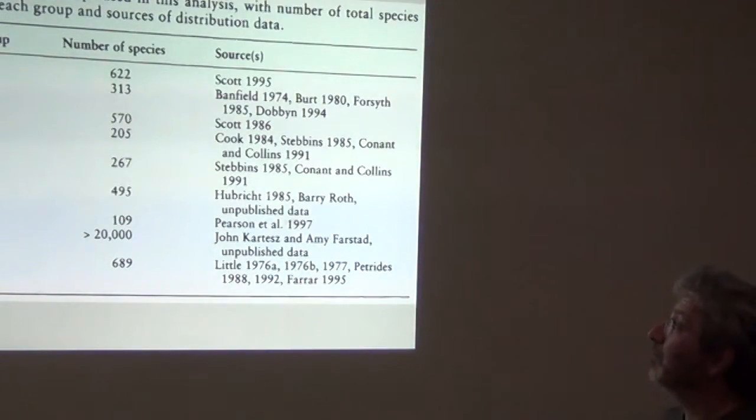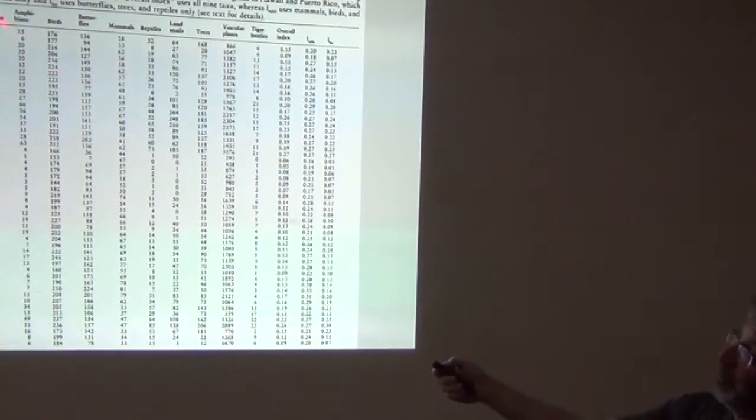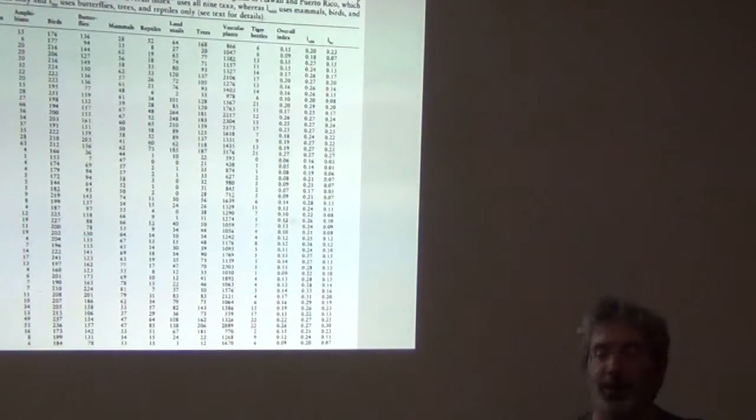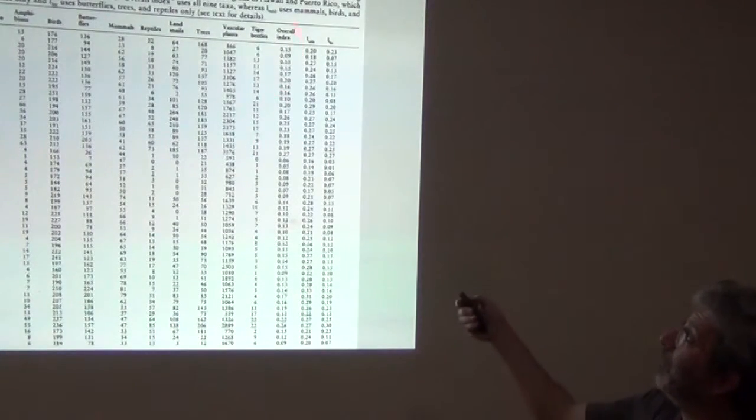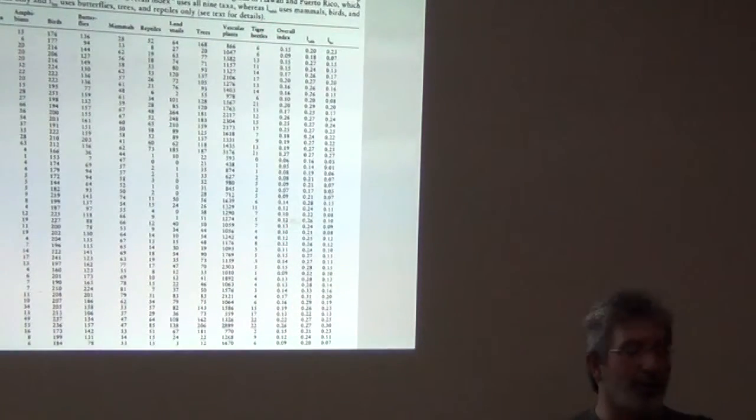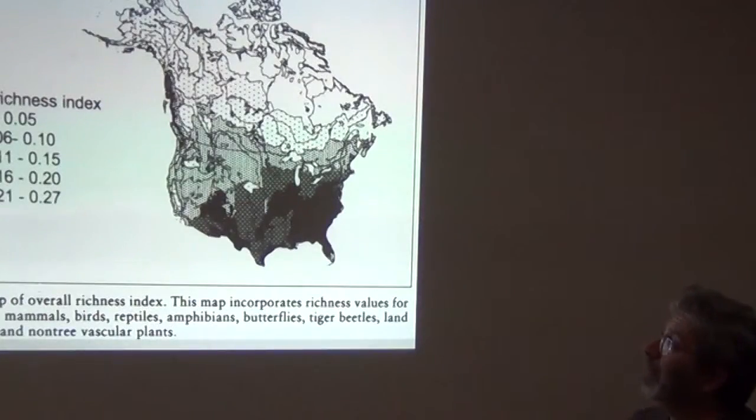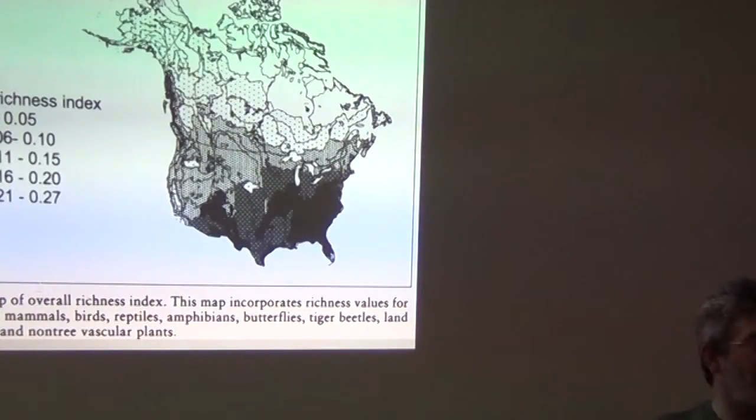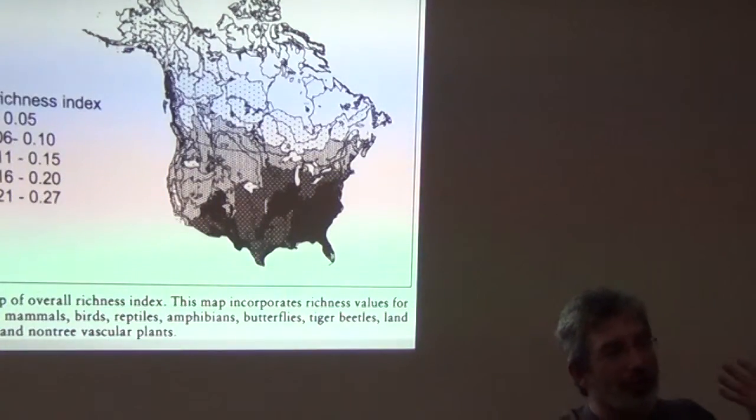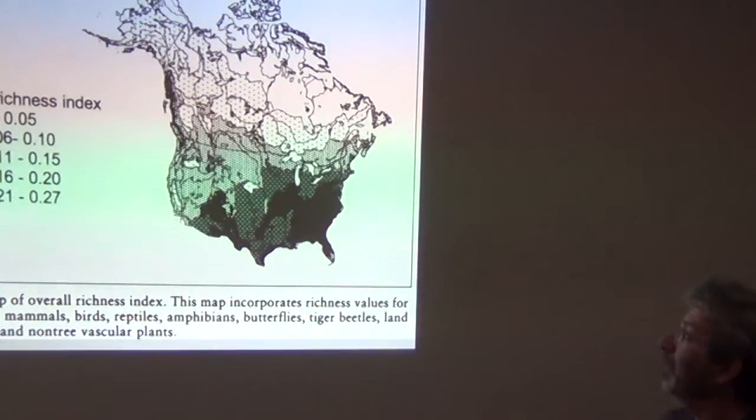And for each group, and for each ecoregion, here are the ecoregions, and here's amphibians, birds, butterflies, da-da-da-da-da, they got a richness value. So that's simply the number of species that occurs in that ecoregion. And they also combined this into an overall index of richness of that ecoregion. I'm not going to go into the details of how they did that. I'll get you guys the paper. And so here's that overall richness index. So this is looking at patterns across all of the taxa. And what do we see? Well, northern Canada is pretty depauperate. Northern U.S. is still pretty depauperate. And then the southeast and parts of the southwest of the country and this gulf fringe tend to be the richest part.